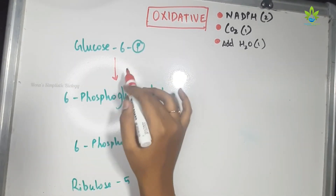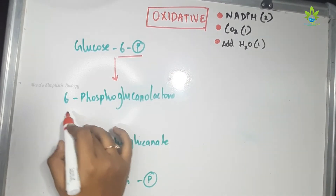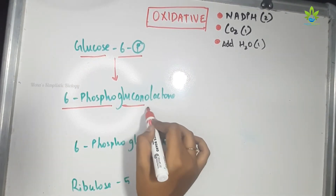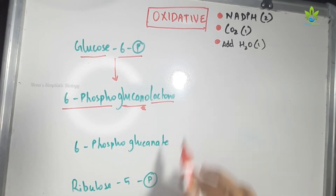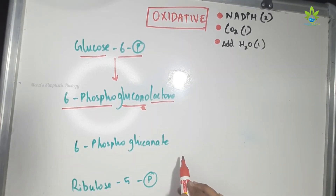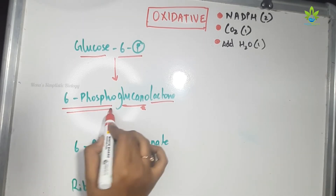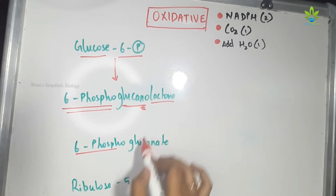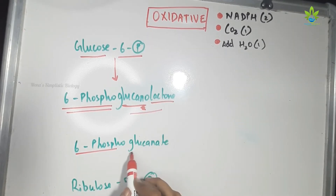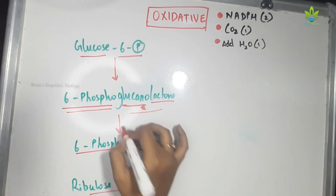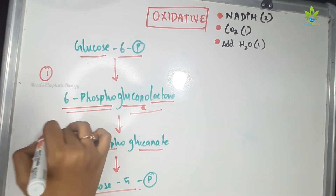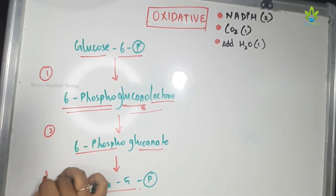To memorize: first, glucose-6-phosphate. Second, glucose-6-phosphate — add '6-phospho' and in the first term keep 'glucose', then add 'lactone' to get glucose-6-phosphogluconolactone. That is the first reaction. For the second reaction, take glucose-6-phosphogluconolactone and remove the lactone to get 6-phosphogluconate. That is the second reaction. And finally, ribose-5-phosphate is the end product. So those are the three reactions.